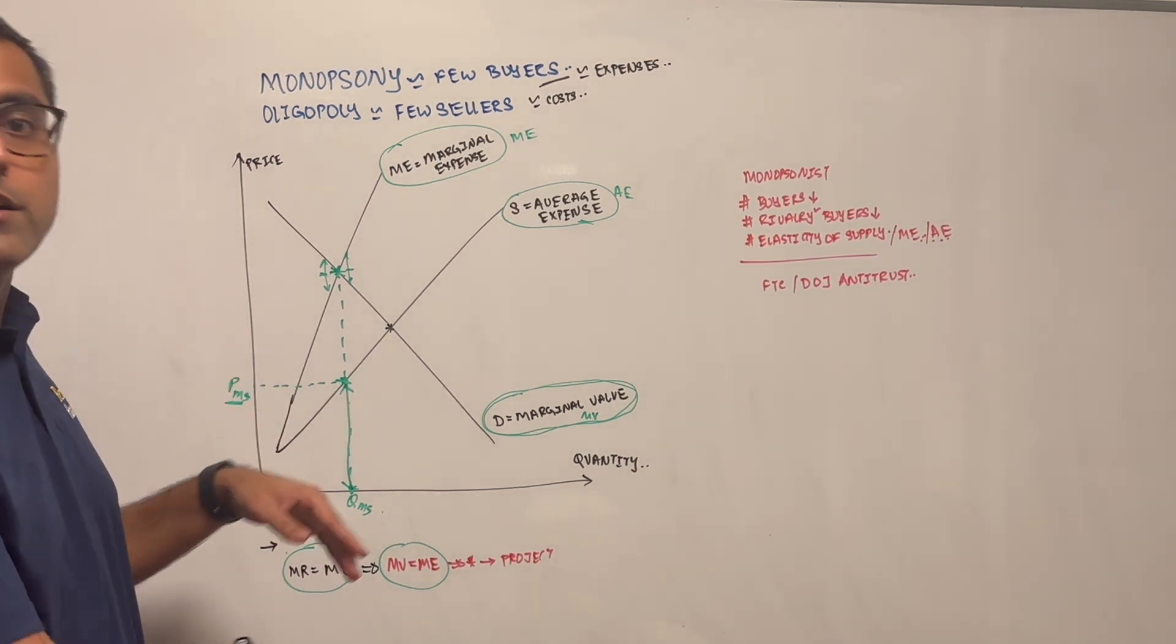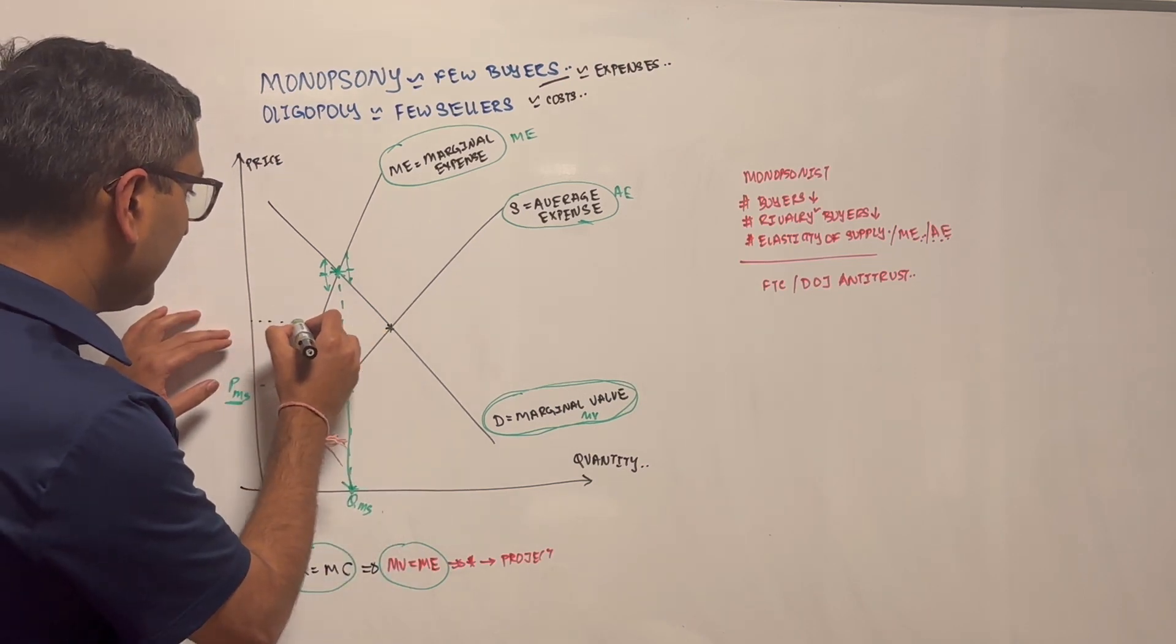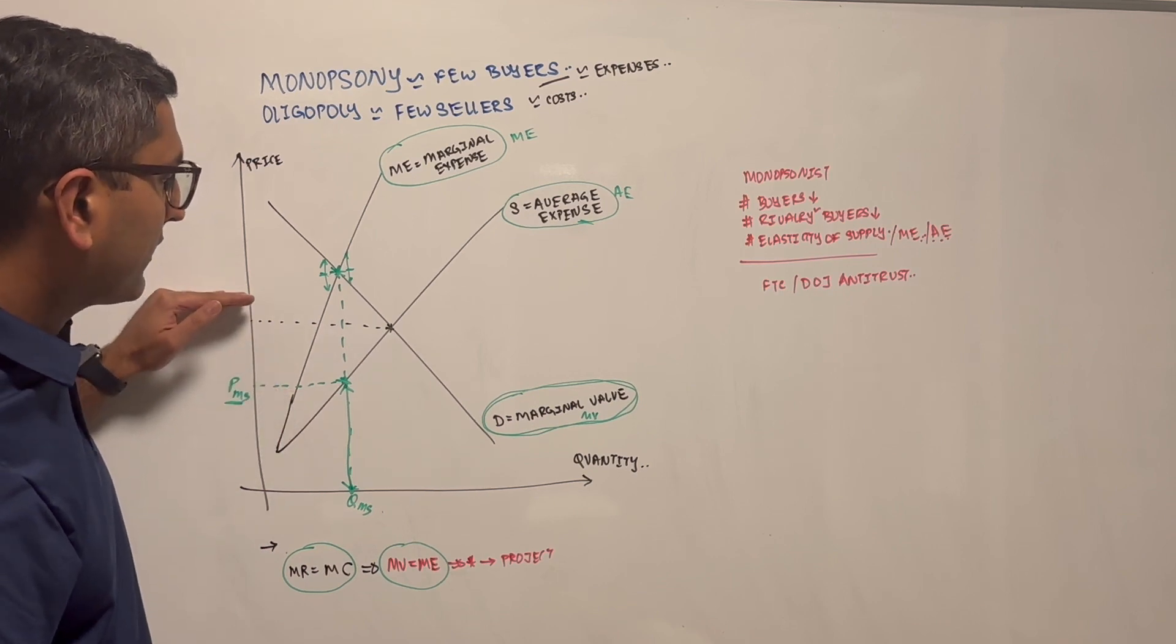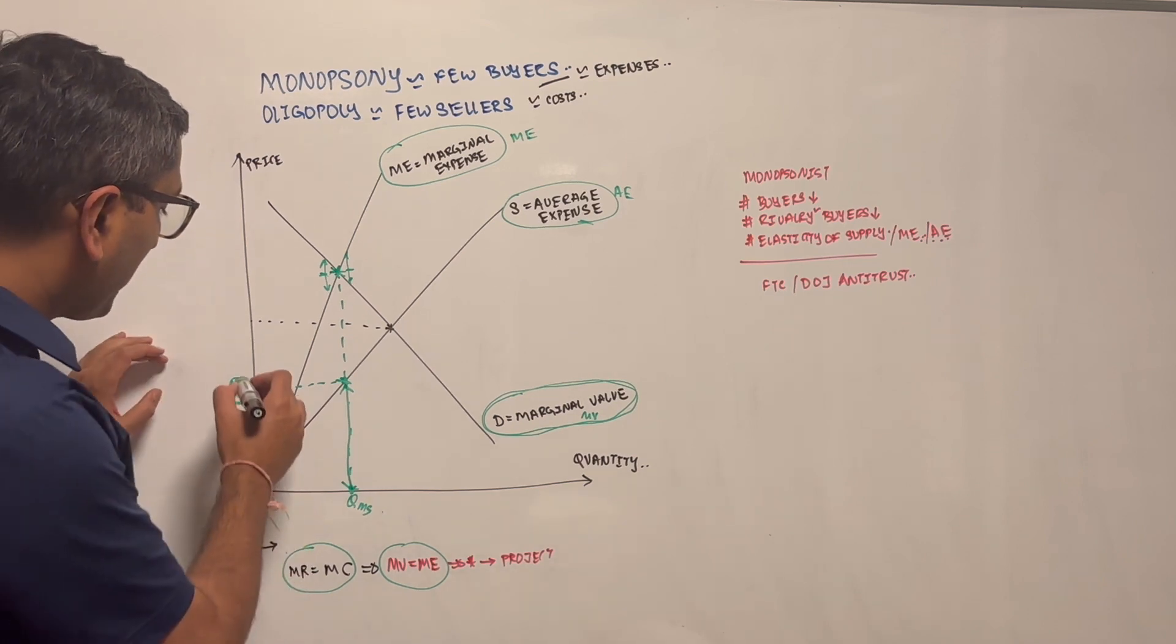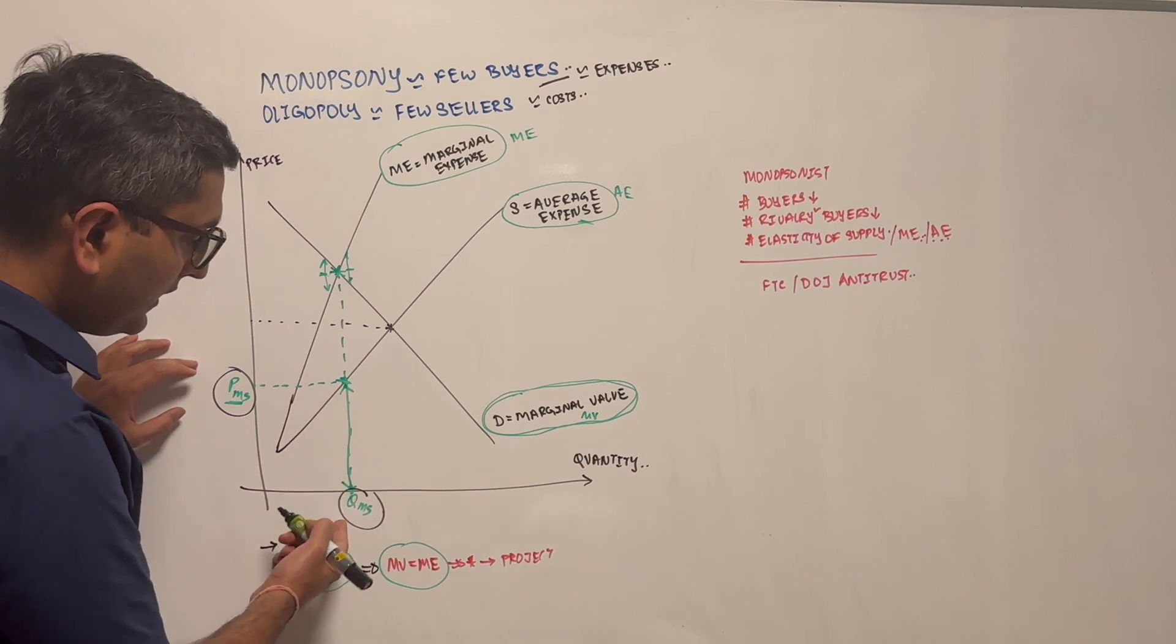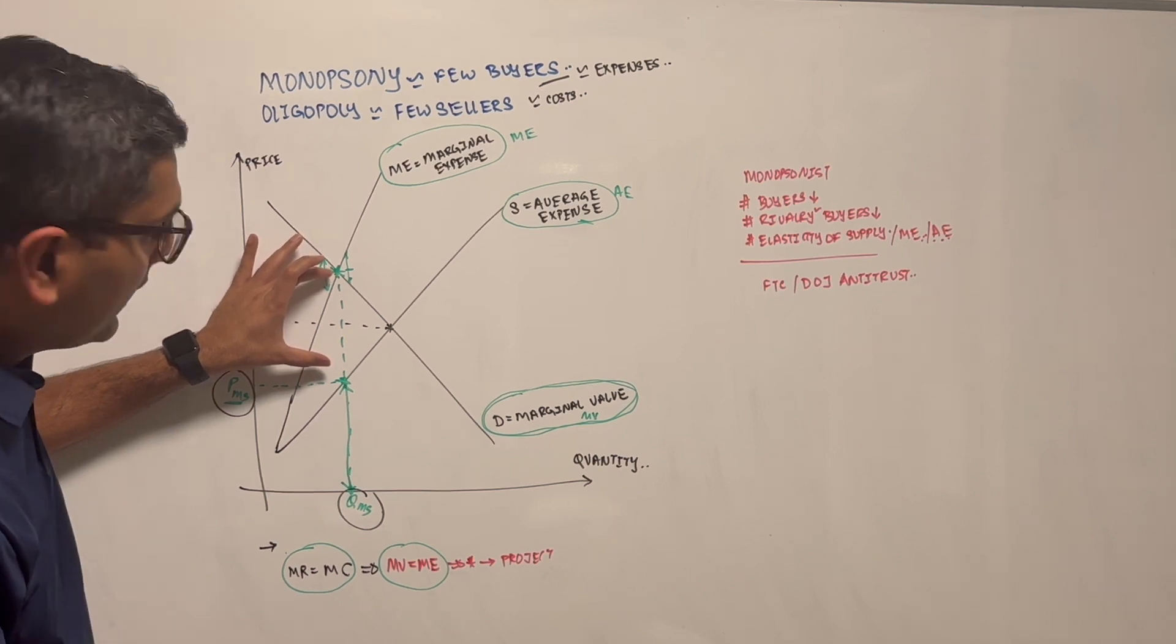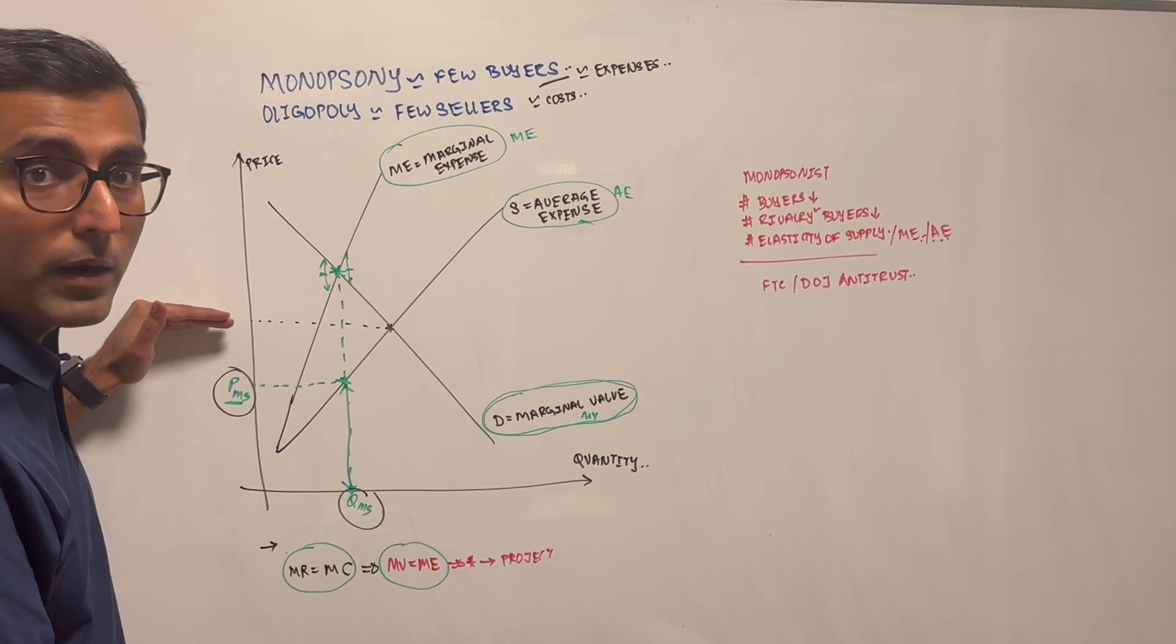In a situation where there are like hundreds of buyers, so you as a buyer don't have power, then you would have had a clearing point where we start to see prices that are much higher. So now you see we got the price that a monopsonist would be willing to pay and we also see the quality. So they are able to now pay significantly lower price when compared to perfect competition where there are several of these buyers around.